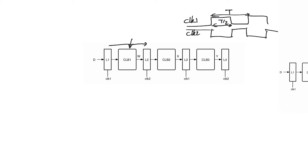We should have T over 2 be greater than or equal to TpD1 plus Tdq1 plus Tsetup2, so that data reaches latch L2 before running out of time T over 2. However, this way of looking at it is too simplistic and ignores one key thing: latches are active during a phase of the clock, not at an edge. What we are doing here is forcing the data to be ready at the rising edge of clock 2 — making it arrive at the input of L2 before that rising edge.